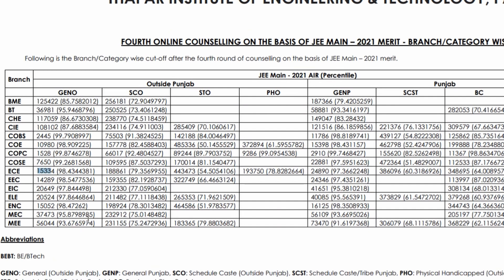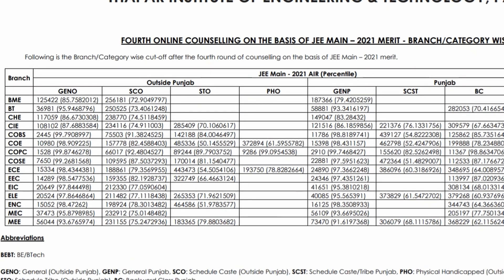For other branches like Mechanical, the cutoff rank is 37,000 for general outside Punjab. Mechatronics is 56,000 rank. For Chemical and Biomedical, the cutoff is above 1 lakh rank. These are the least preferred branches and that's why the cutoffs are lower in terms of rank or percentile.